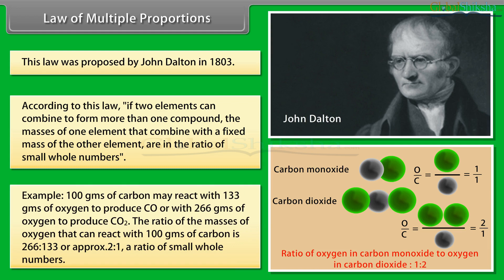For example, 100 grams of carbon may react with 133 grams of oxygen to produce CO, or with 266 grams of oxygen to produce CO₂. The ratio of the masses of oxygen that react with 100 grams of carbon is 266:133, or approximately 2:1 — a ratio of small whole numbers.